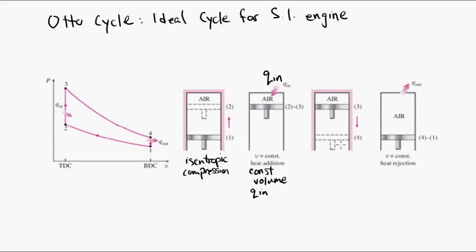From three to four, we have an expansion. In the ideal cycle, it's isentropic expansion, as the piston moves down to BDC. So again, isentropic means no irreversibilities and no heat transfer.